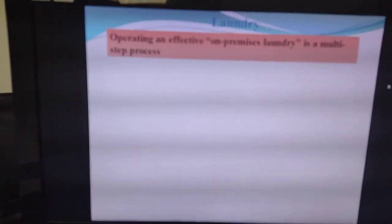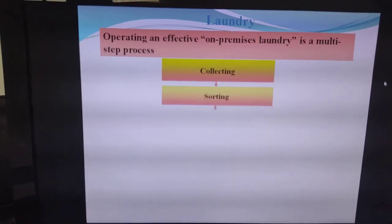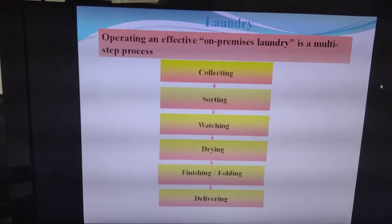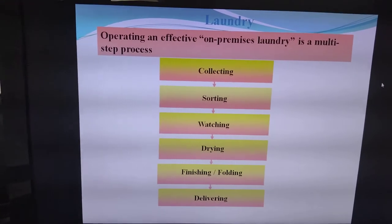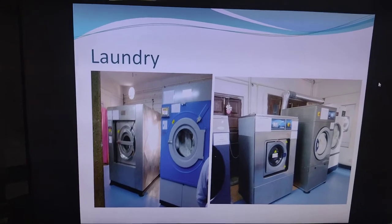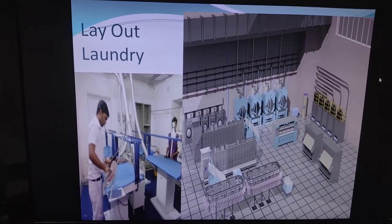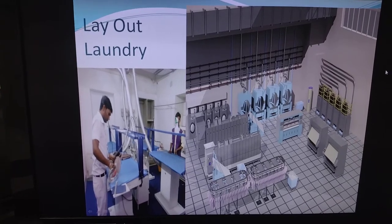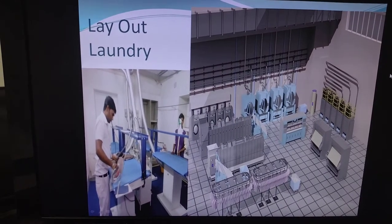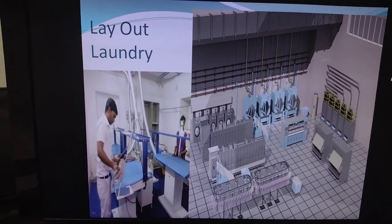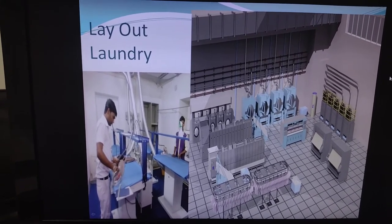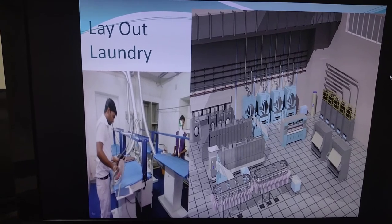Laundry operations are also very important. The process includes collection, sorting of linen, washing, drying, finishing, folding, and delivering. Large machines — washers and dryers — are used in laundry. The laundry layout includes washer machines, calendaring machines, and pressing machines. Transportation tall trolleys are also used.